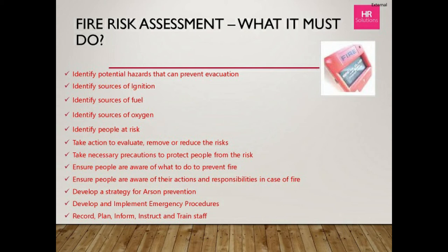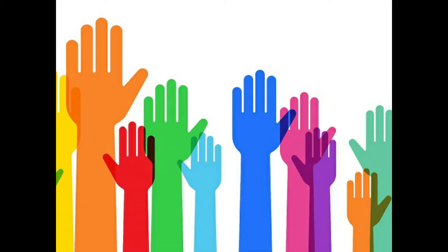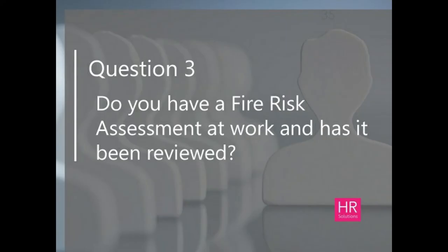A fire risk assessment should contain: identified potential hazards including sources of ignition, fuel, and oxygen; people at risk; evaluation and reduction measures; precautions required; training, information, and instruction for staff; emergency procedures; and an arson prevention strategy. When you receive your fire risk assessment from a competent company, ensure it has all these sections. At the back there should be a matrix or action plan with recommendations to achieve compliance over one, six, and twelve months.